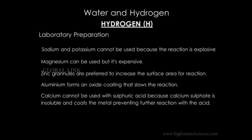Aluminum reacts slowly with acids due to a layer of aluminum oxide on its surface. Calcium cannot be used with sulfuric acid because the salt formed, calcium sulfate, is insoluble and forms a coat on the metal surface which prevents further reaction.